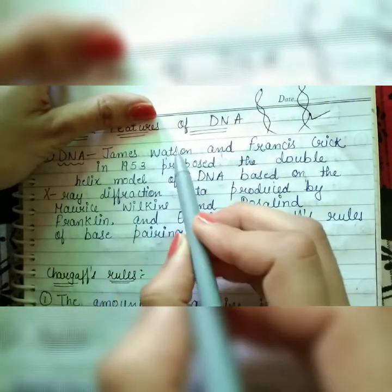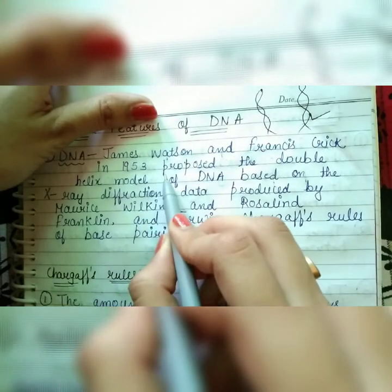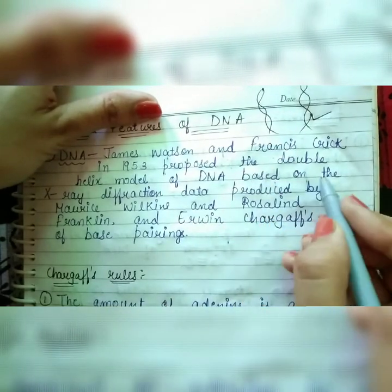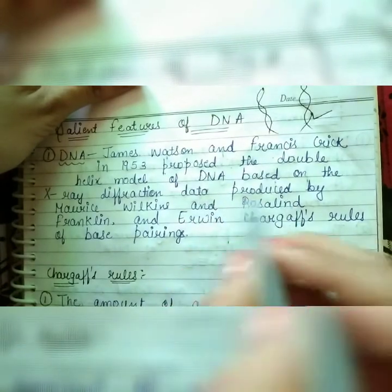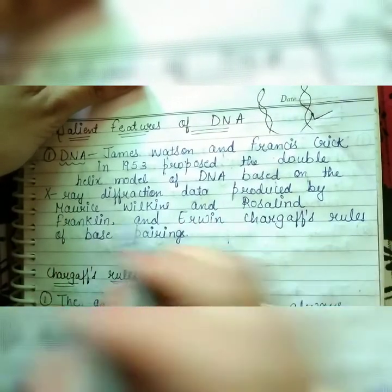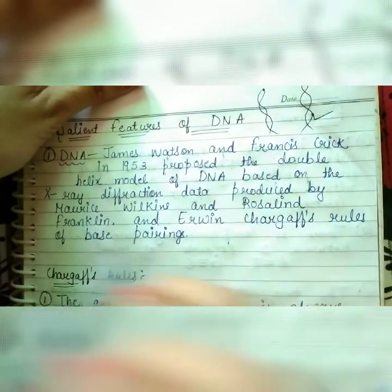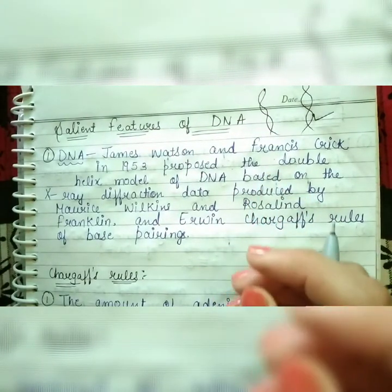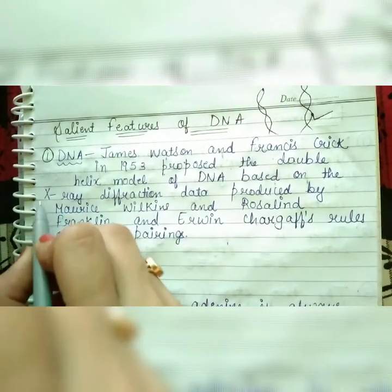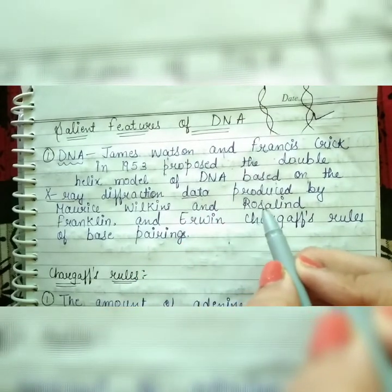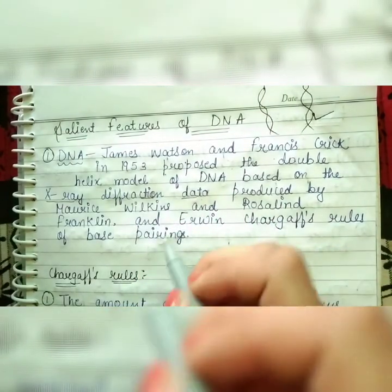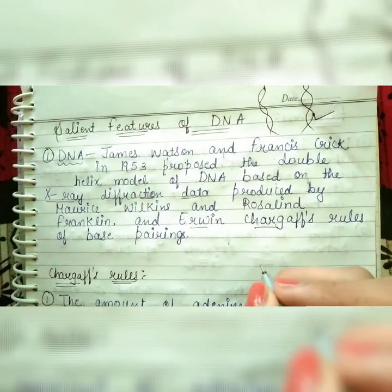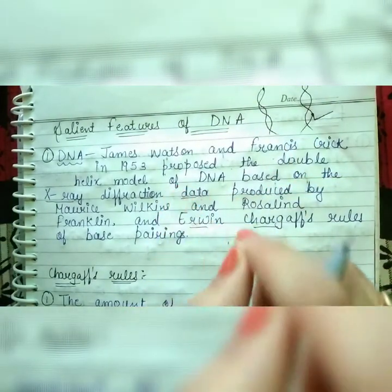James Watson and Francis Crick in 1953 proposed the double helix model of DNA. This model was based on the X-ray diffraction data produced by Morris Wilkins and Rosalind Franklin, and also on Erwin Chargaff's rules of base pairings.